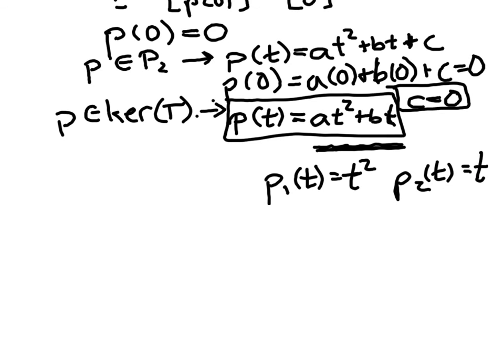So this would be a spanning set for the kernel. The kernel of this transformation T is equal to the span of the polynomials t squared and t.